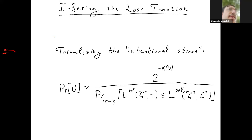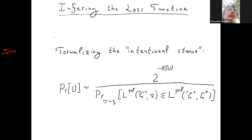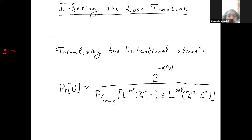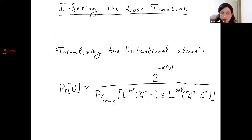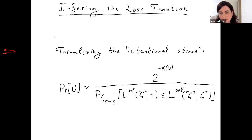Have you heard about the max causal entropy principle? It's very similar — something like: the right loss function in inverse RL under a set of features or constraints is the one that maximizes causal entropy, which also acts as a sort of simplicity prior. I don't think max entropy actually introduces a simplicity prior unless it's entropy with respect to a simplicity prior, but that's something to discuss later.